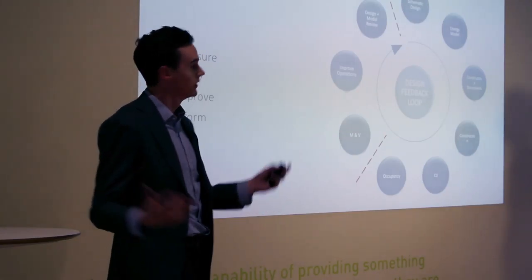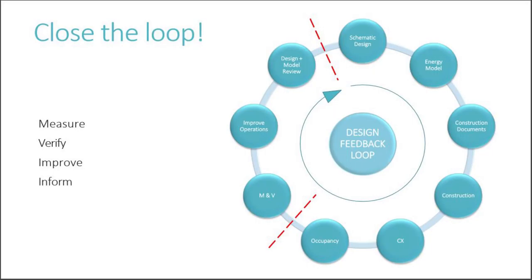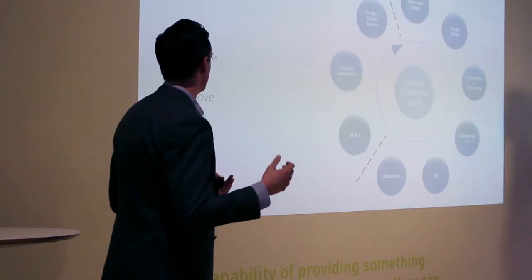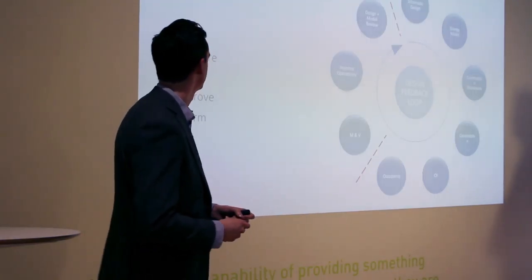So what do we do? We need to close the loop. We need to measure the data that's available in the building, verify our assumptions compared to the model, make operational improvements during occupancy, and use that to inform the next iteration of design.